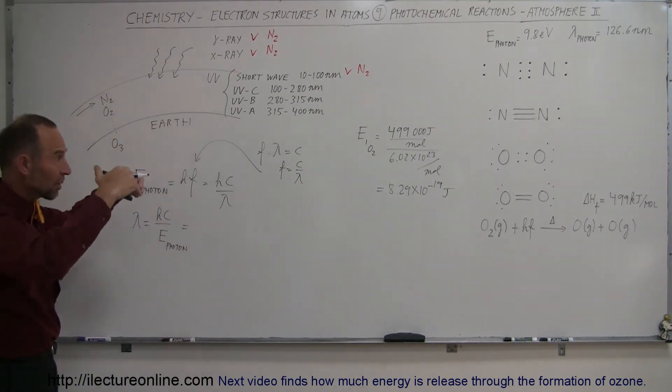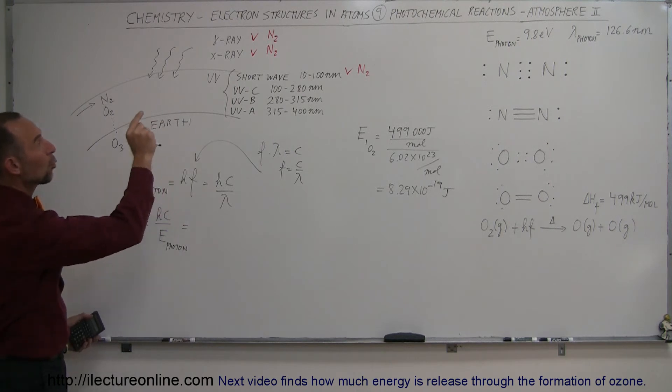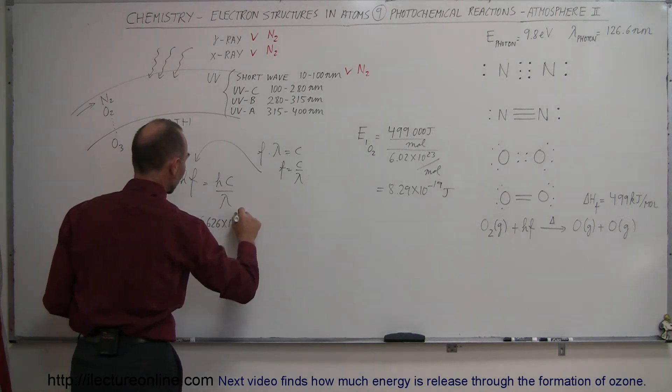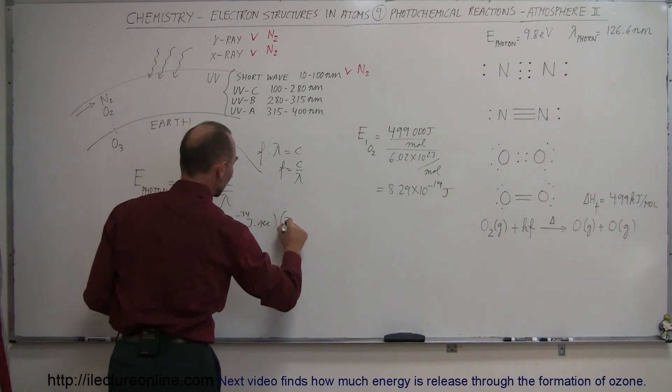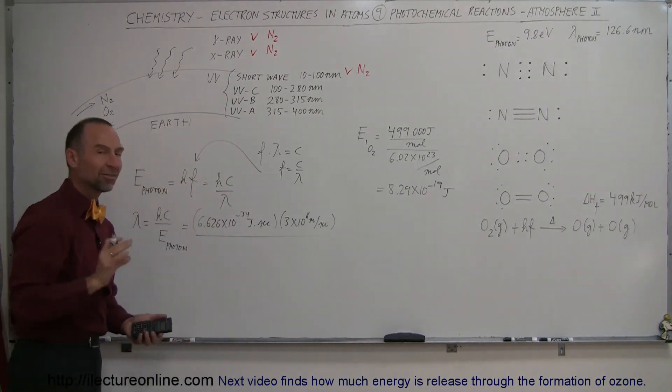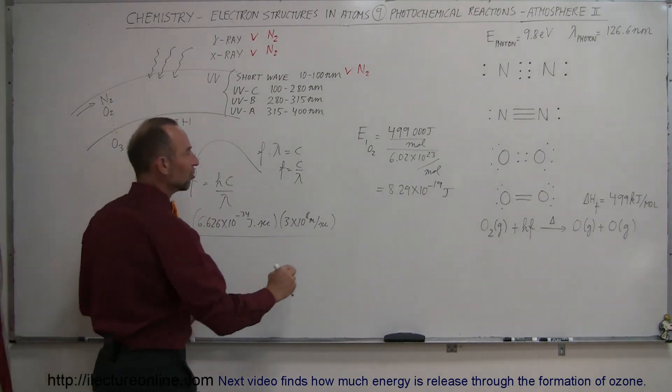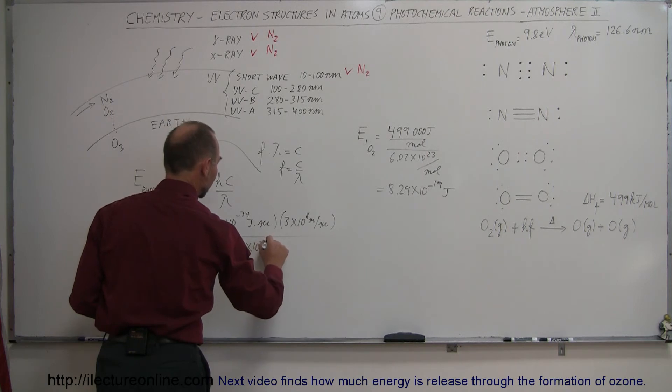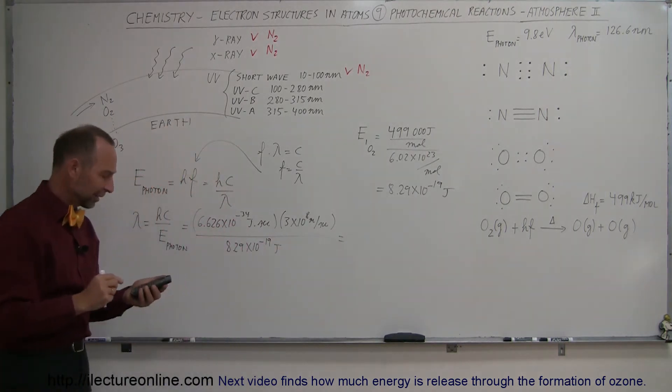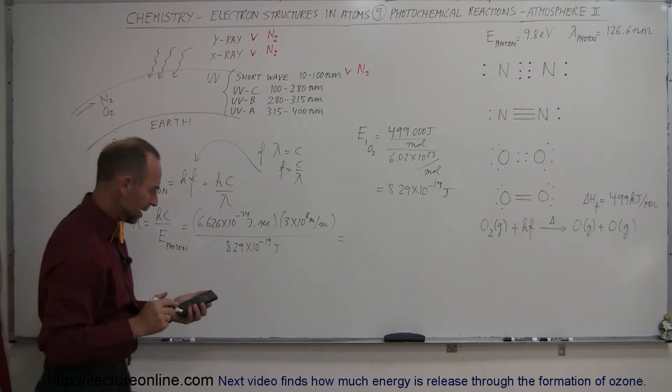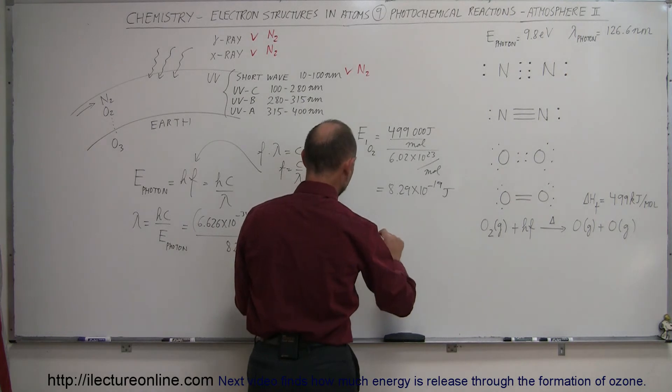Remember, this is the photons coming in from space that react chemically with the atoms in the atmosphere. So we have 6.626 times 10 to the minus 34 joules times seconds, times the speed of light, 3 times 10 to the 8 meters per second, and we divide the whole thing by the energy of that single photon coming in that will have enough energy to break up an oxygen molecule, which is 8.29 times 10 to the minus 19 joules. So what kind of wavelength is that? Let's figure it out. Times 6.626e-34 times 3e8 equals, and it has a wavelength of 240 nanometers.